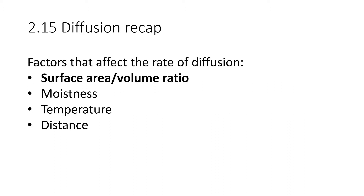The rate at which diffusion happens is very important for this topic, so we'll have a quick look at the factors that affect it. Firstly and most importantly is the surface area to volume ratio — the larger the surface area to volume ratio, the more surface there is per volume, and the faster diffusion can happen through that surface. Secondly, the moistness of the surface, the temperature — think about collision theory from chemistry to consider why — and the distance. The further something has to travel, the longer it takes to diffuse, so a short distance means quick diffusion and a long distance means slow diffusion.